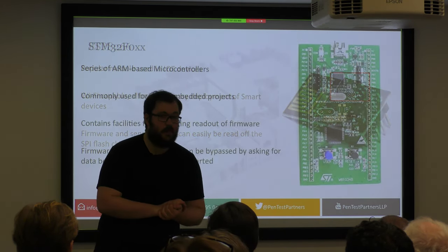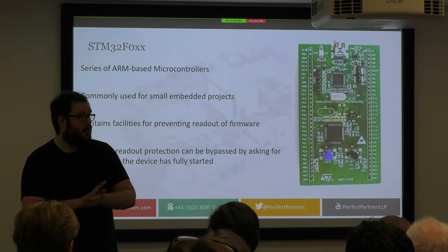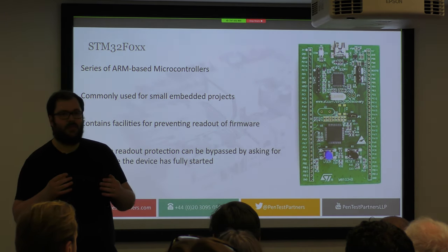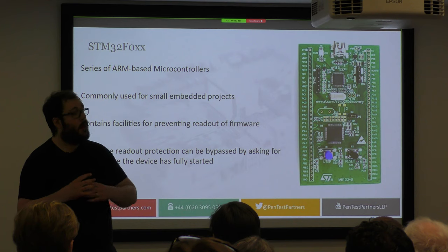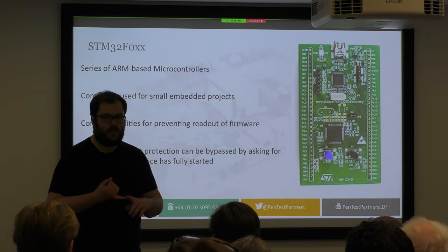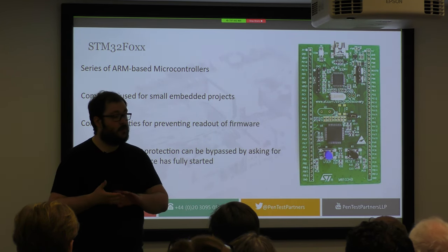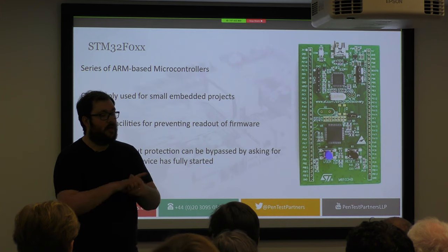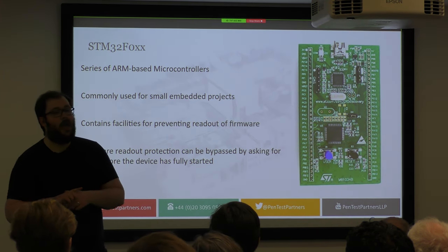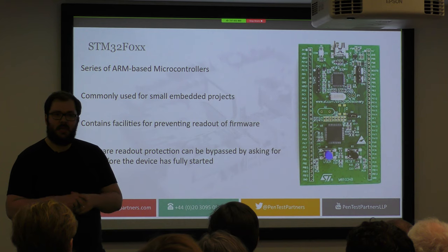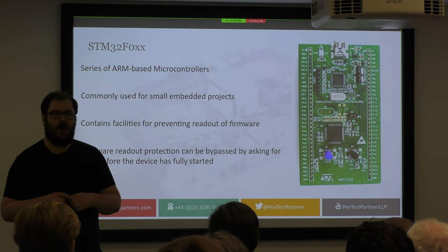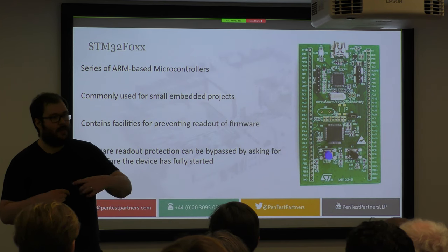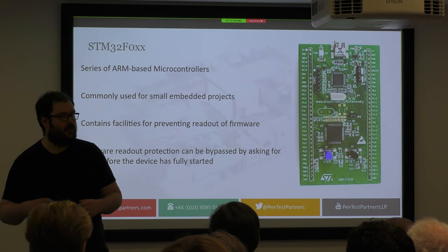Now the STM32 chips — my favourite series. They're ARM-based microcontrollers with USB, SPI, and other peripherals, and they have facilities for blocking someone from reading the firmware. The STM32F0 series can have its firmware readout protections bypassed by turning the device on and off very quickly while trying to read the firmware — you can read a bit at a time, incrementally. It takes several hours, but you'll get the whole firmware off that device by just toggling the power. I've demonstrated this on several engagements with clients, and the only real defence is to use a different chip.